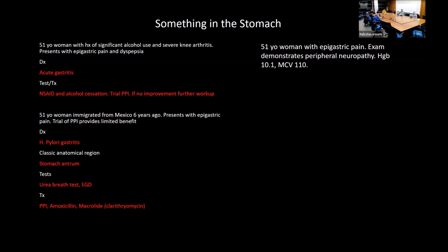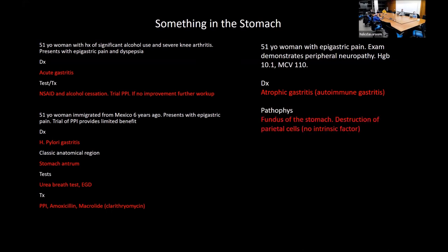A 50-year-old woman with epigastric pain, peripheral neuropathy, and macrocytic anemia (MCV 110) — that's autoimmune gastritis. It typically affects the fundus of the stomach, with destruction of parietal cells leading to limited intrinsic factor production, causing B12 deficiency.